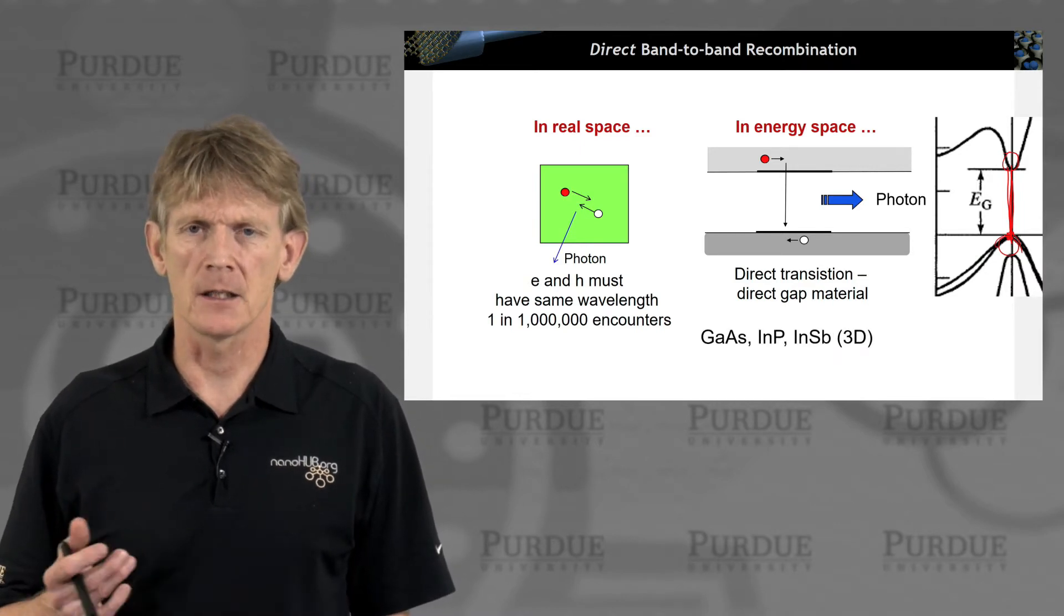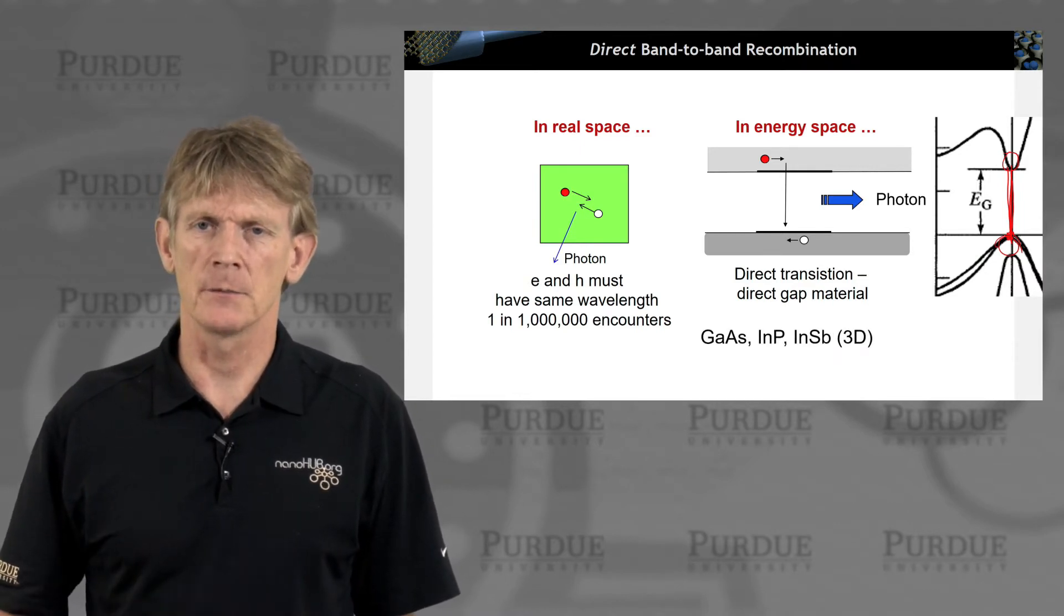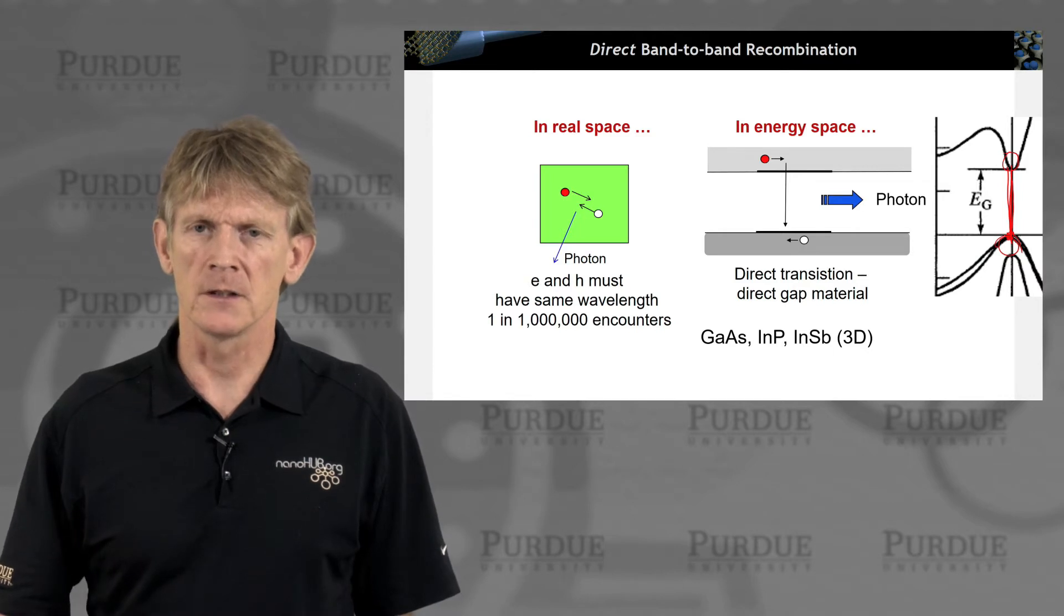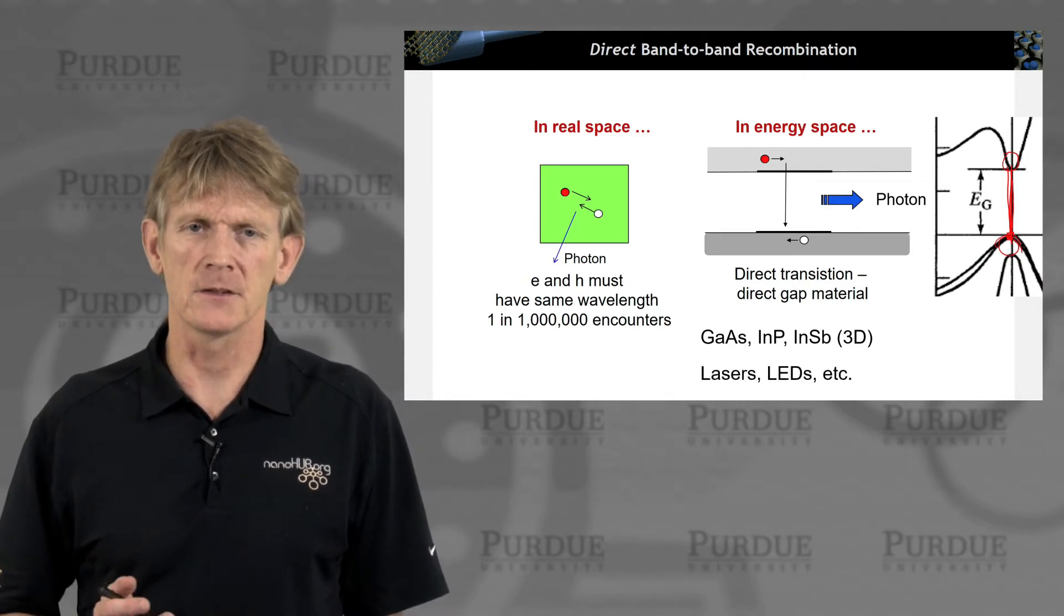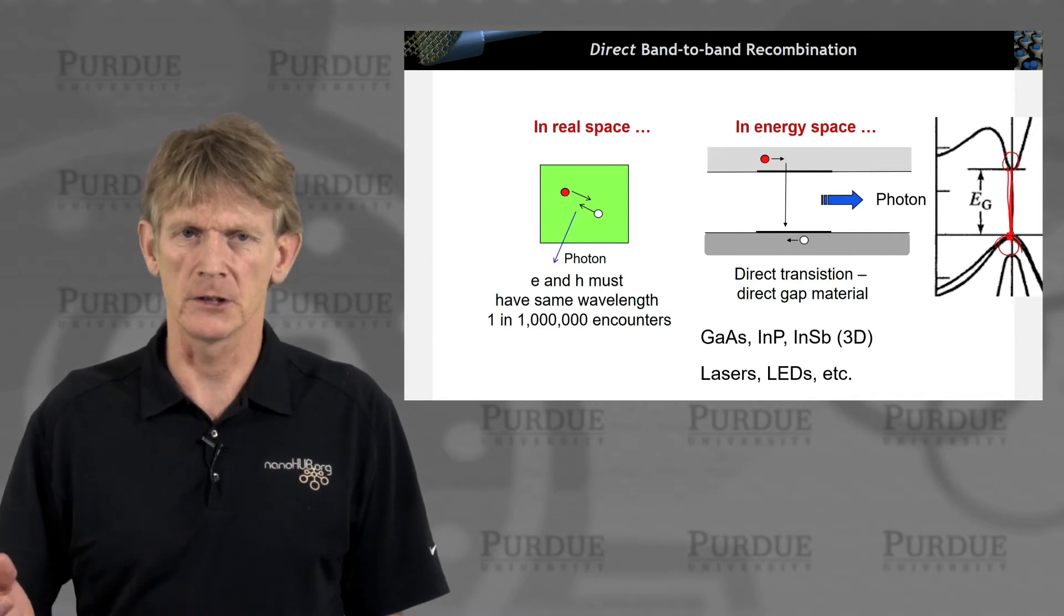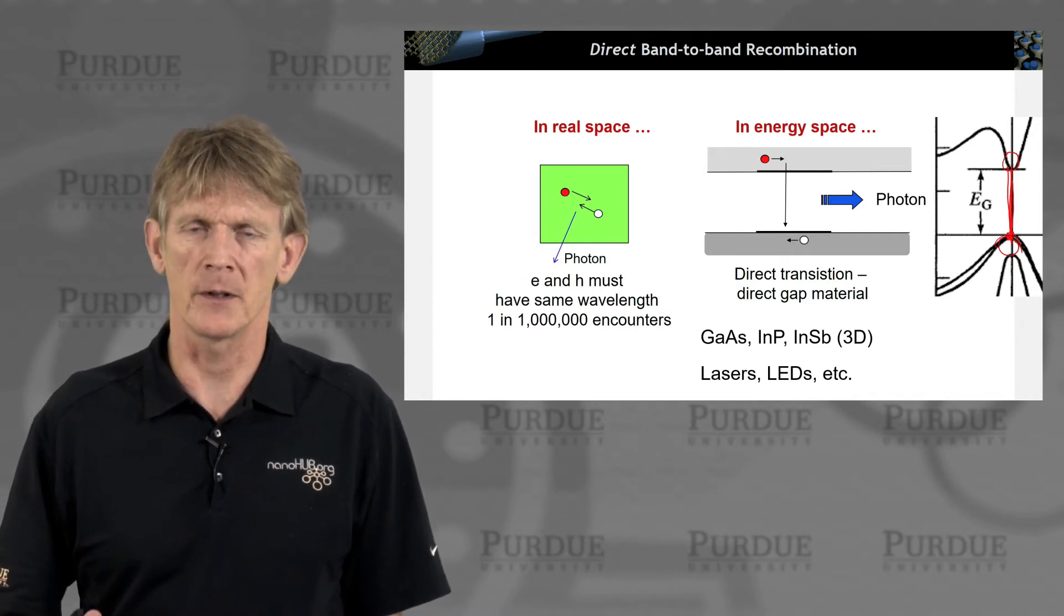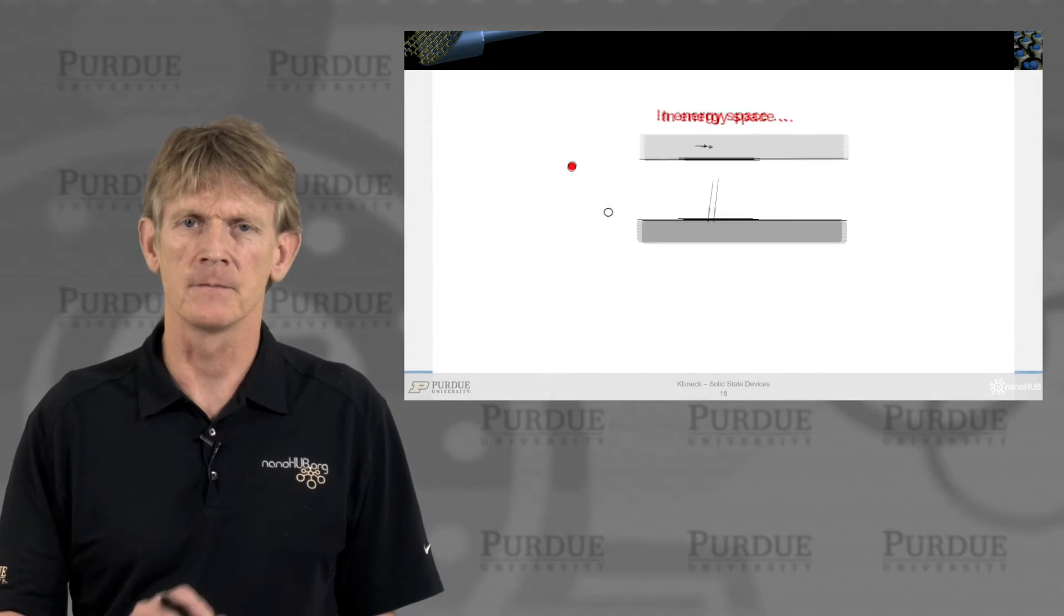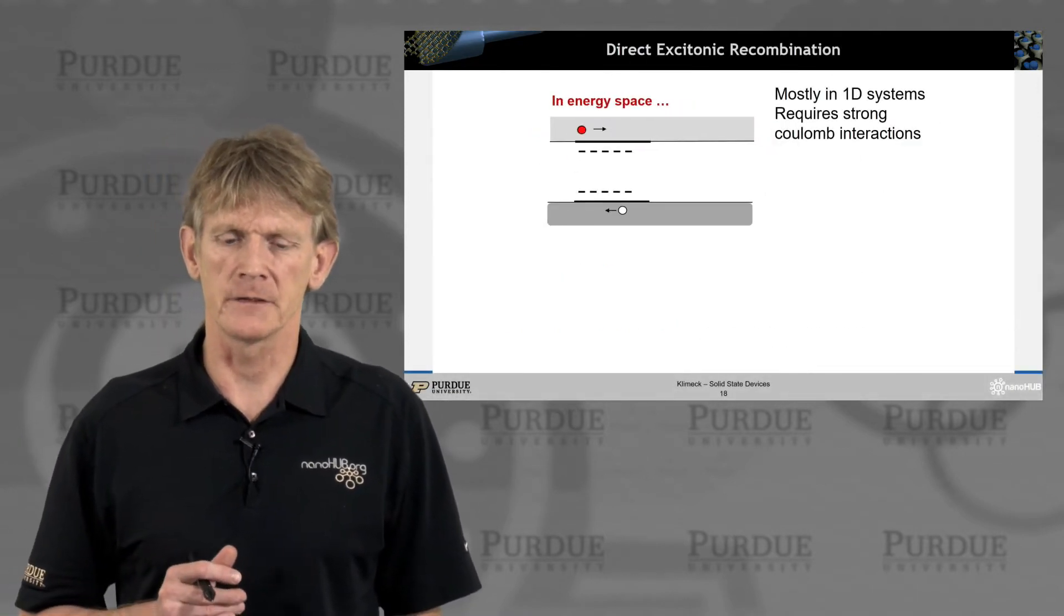And it's happening in gallium arsenide, indium phosphide, indium antimonide in 3D materials, and that's happening in lasers and LEDs. So this is very common, a very, in many ways, a very desirable effect. You want to pump photons out of a laser or out of a diode.